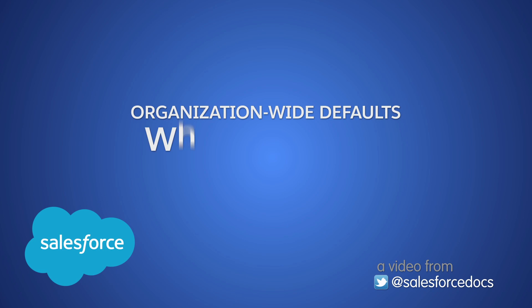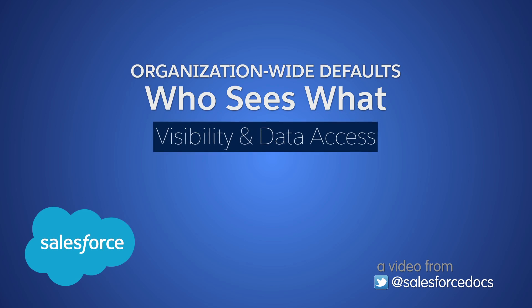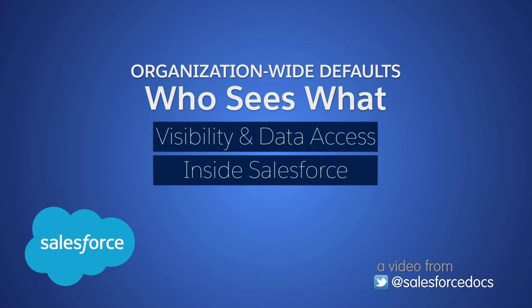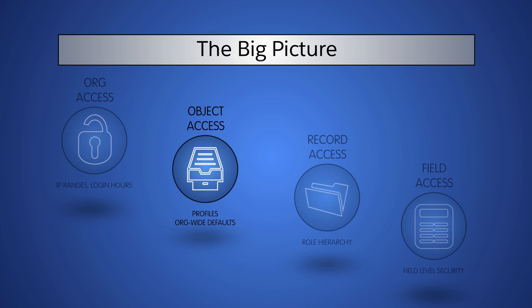Welcome to Organization-Wide Defaults, the fourth in the Who Sees What series. These videos provide the basics on visibility and data access in Salesforce. Now that we've given individuals access to the organization and access to objects, it's time to think about the baseline level of visibility we want for each object across the entire organization.